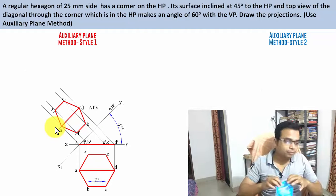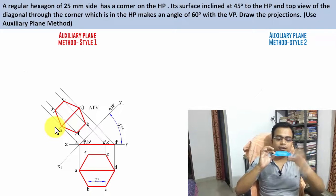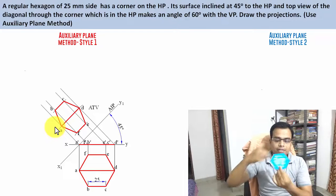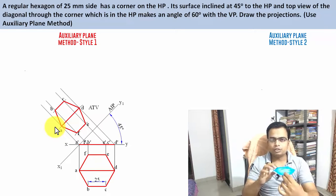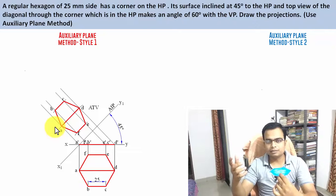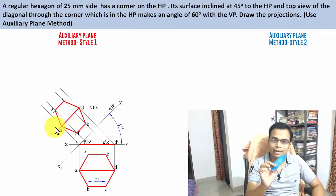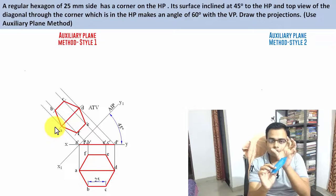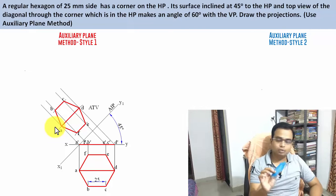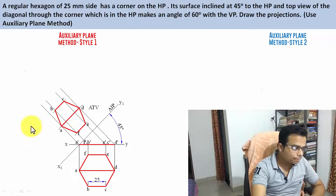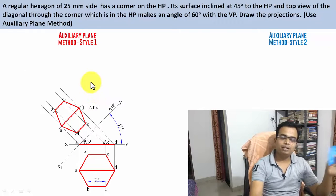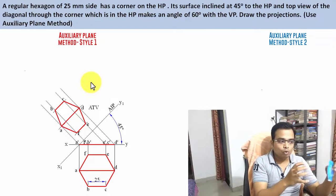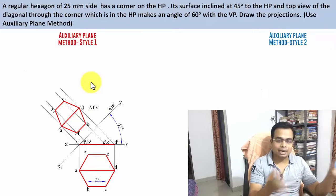Next step: consider the diagonal through the corner which is in the HP. In the flat position you can see the true length of the diagonal. But when the hexagonal surface is inclined, this diagonal also squeezes up from the top — giving the top view of the diagonal AD. The true length and the top view of the diagonal are now distinct. In the next step we must incline the top view of the diagonal with respect to the vertical plane using the auxiliary vertical plane.